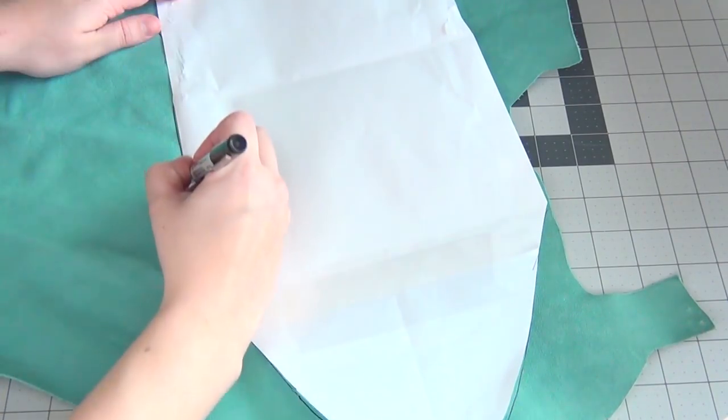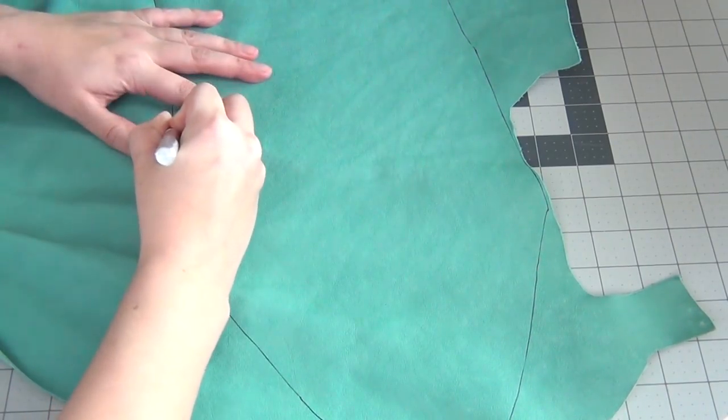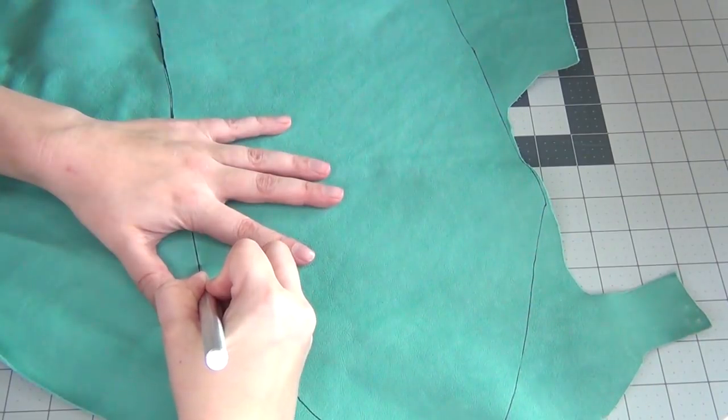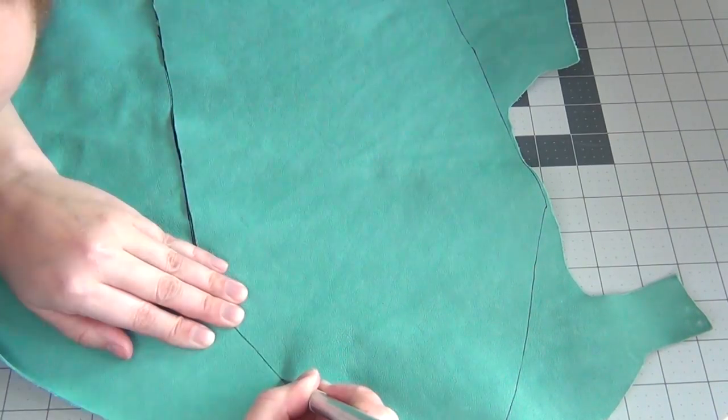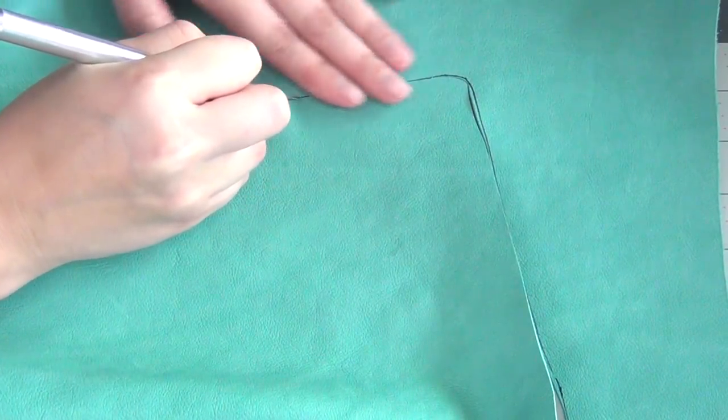And either trace around it or begin cutting. I prefer to trace and then use my exacto knife to cut it just inside of that tracing line so that I don't have any of the ink on the clutch itself. Work slowly while you do this and make sure that your exacto knife is very sharp.